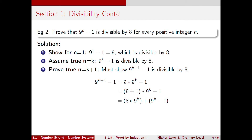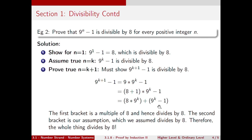We now substitute n as k plus 1 and must show that 9 to the power of k plus 1 minus 1 is divisible by 8. Following the same steps as before: 9 to the k plus 1 minus 1 equals 9 times 9 to the k minus 1. We split the 9 as 8 plus 1 times 9 to the k minus 1, then distribute to get 9 to the k times 8 plus 9 to the k minus 1 in two separate brackets. The first bracket is a multiple of 8, and the second bracket, 9 to the k minus 1, is divisible by 8 by our assumption, making the whole expression divisible by 8.